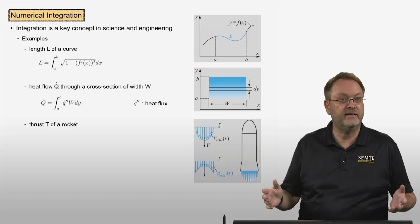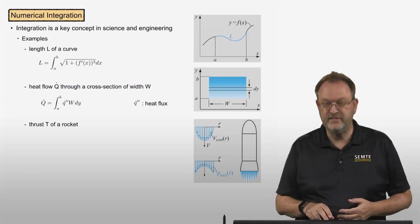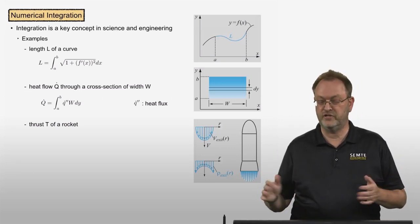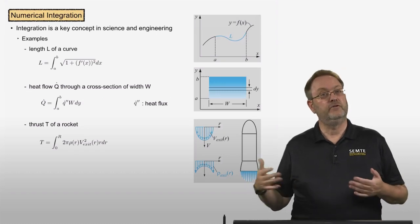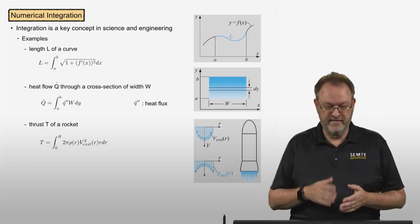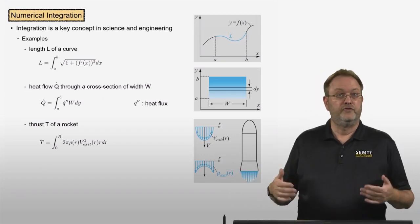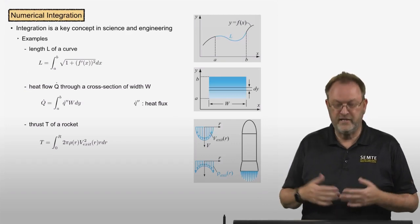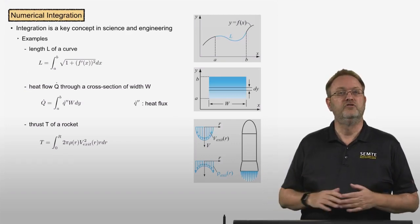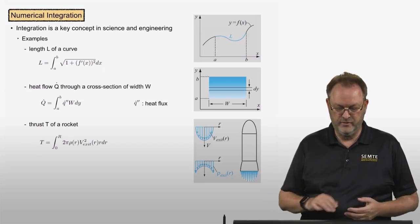One final example is the thrust T of a rocket, where the density and velocity vary across the nozzle. The thrust would be the integral in the radial direction from the center to the radius, the edge of the nozzle, of 2π times the density times the velocity of the exit squared times r dr. All of these involve integrals that we need to evaluate.